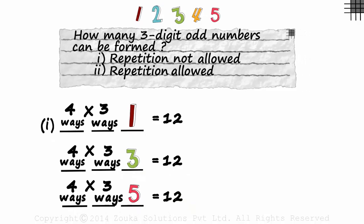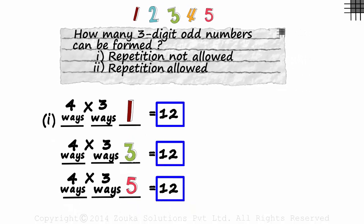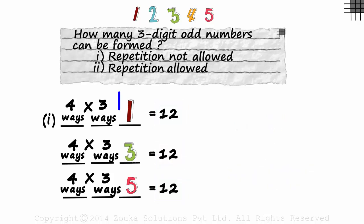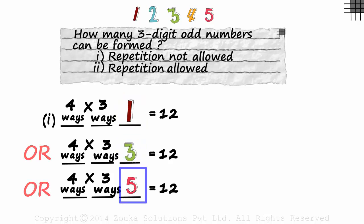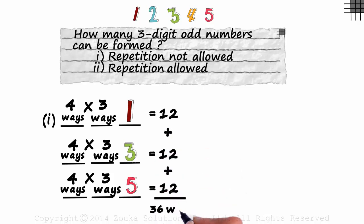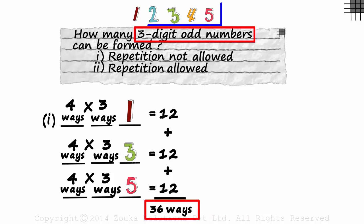Now, what do we do with these three numbers — add them or multiply them? Use plain English: the units digit can be 1 or 3 or 5. It's an OR, and OR implies plus. Adding these three, we get the answer as 36 ways — 36 ways in which we can form three-digit odd numbers using these five digits.